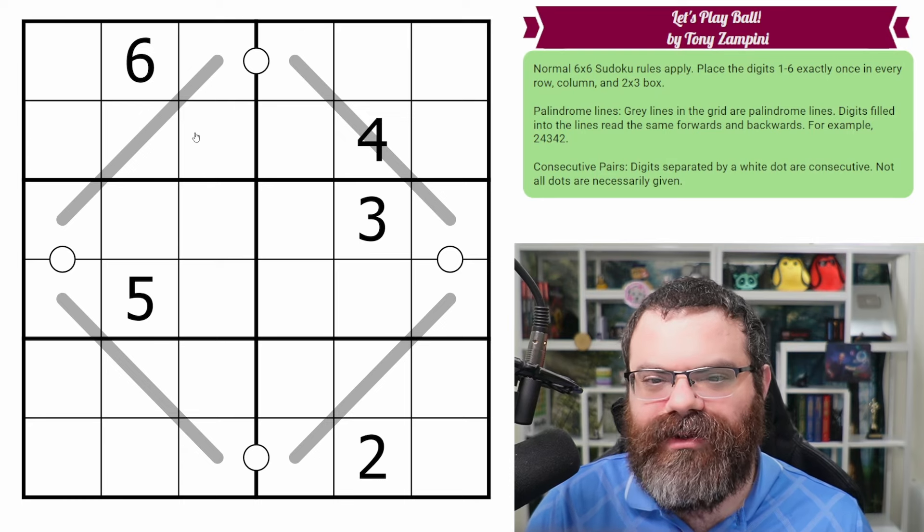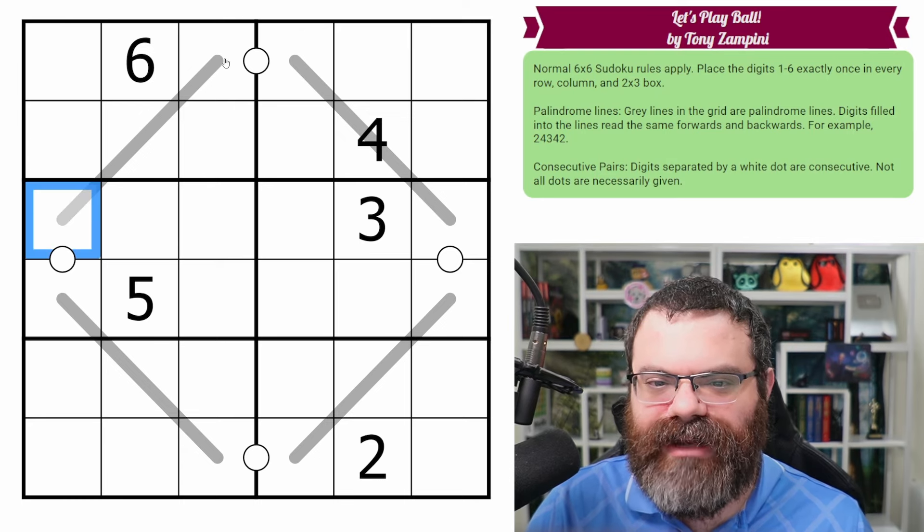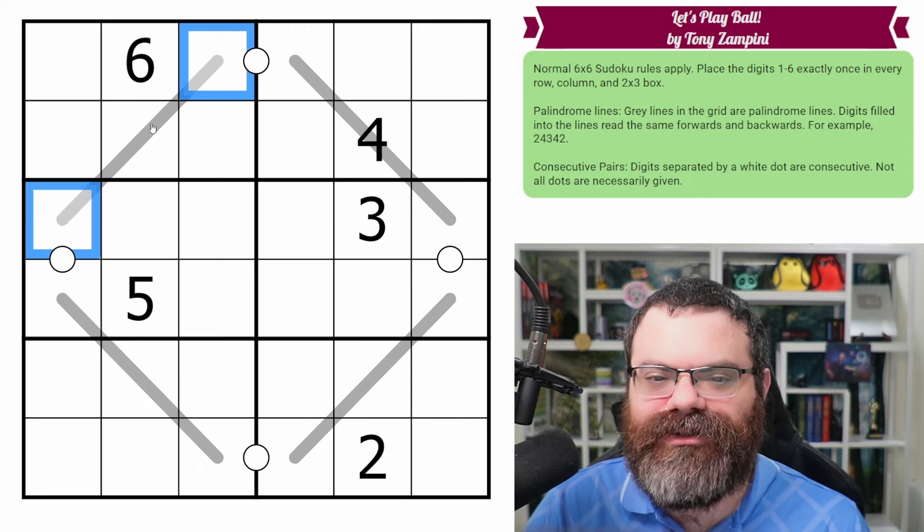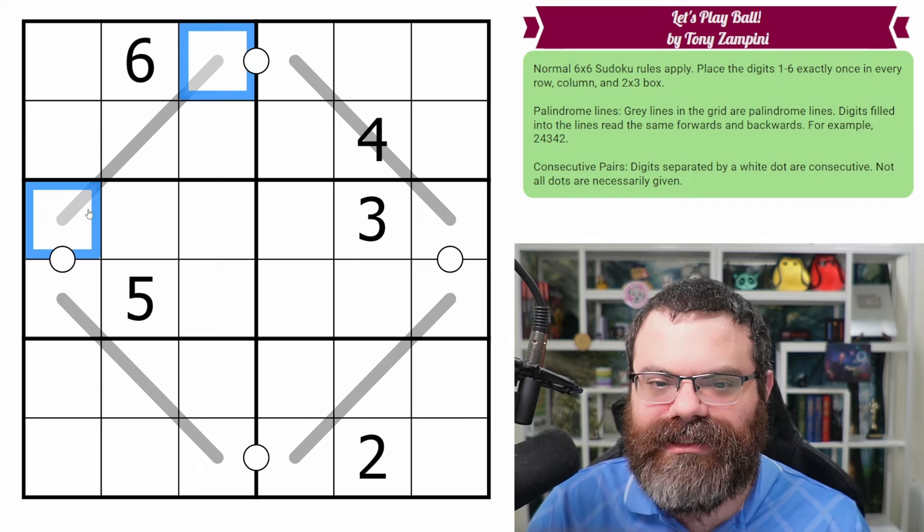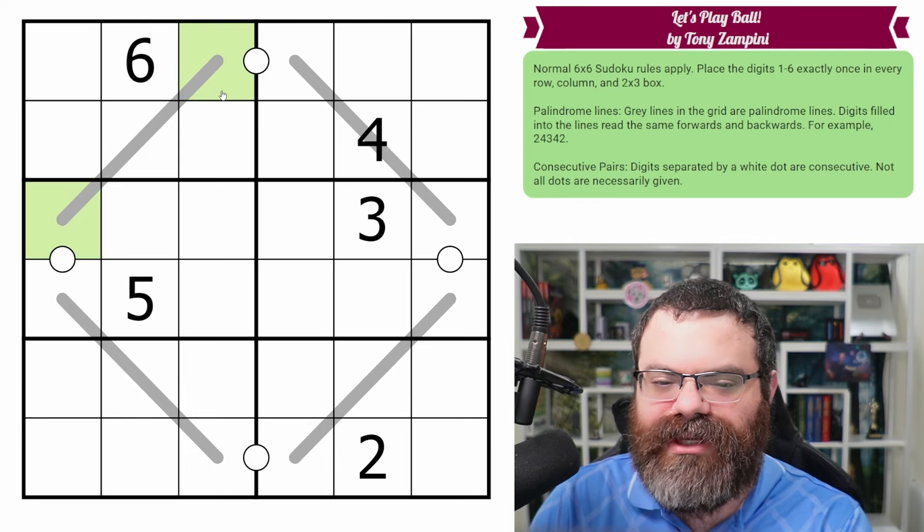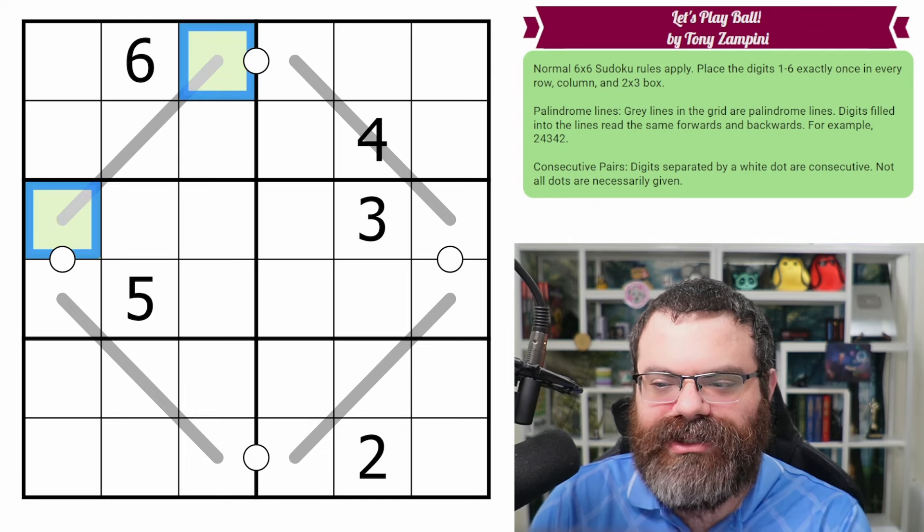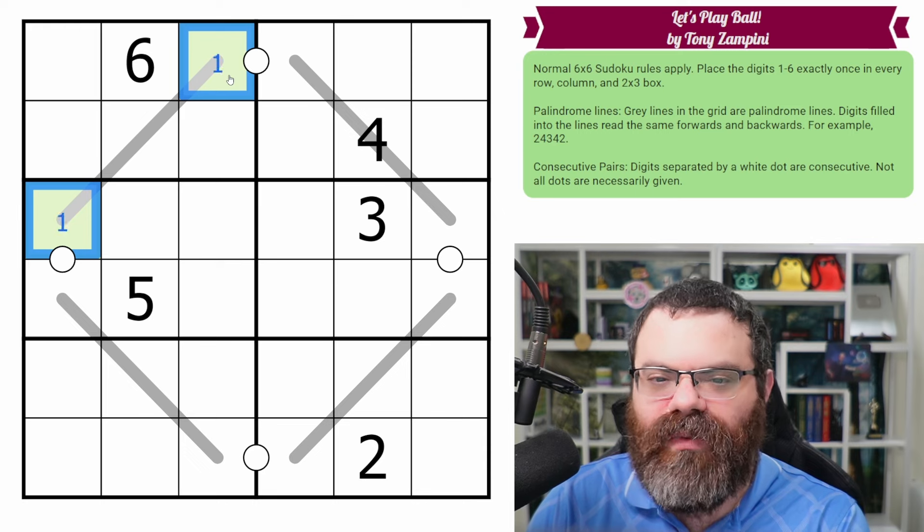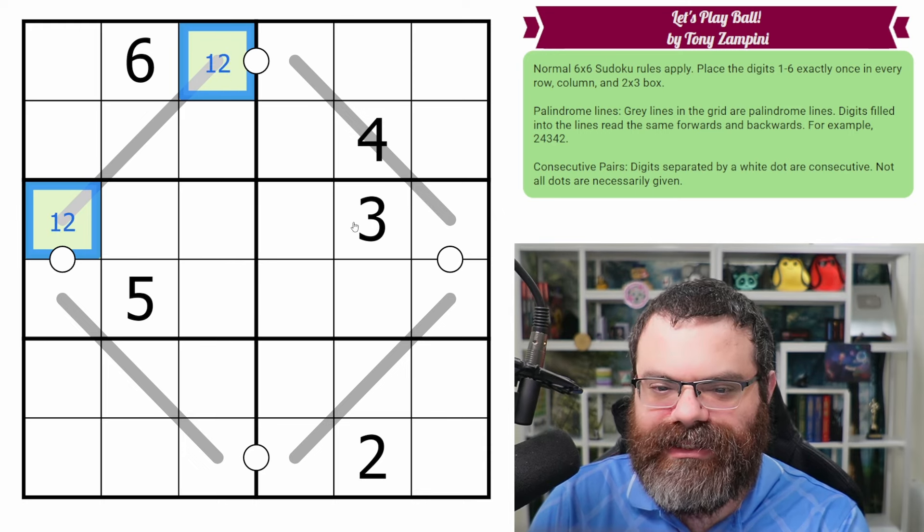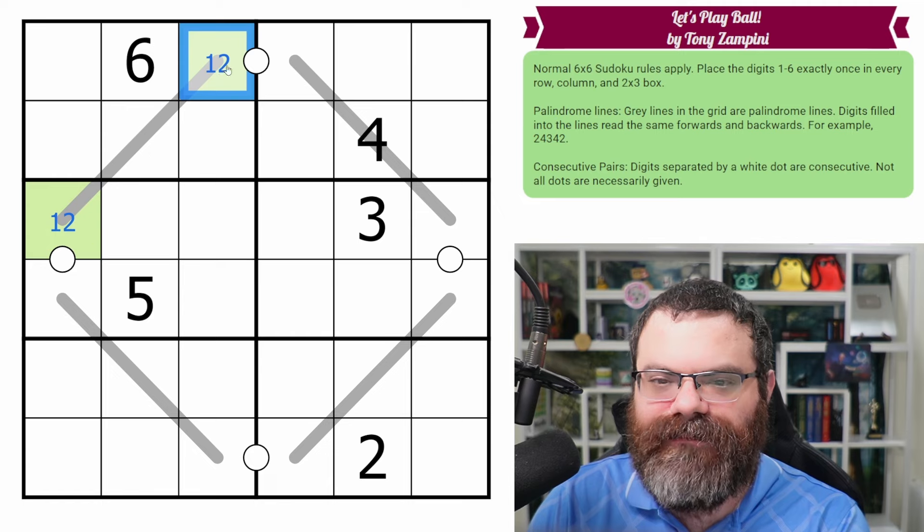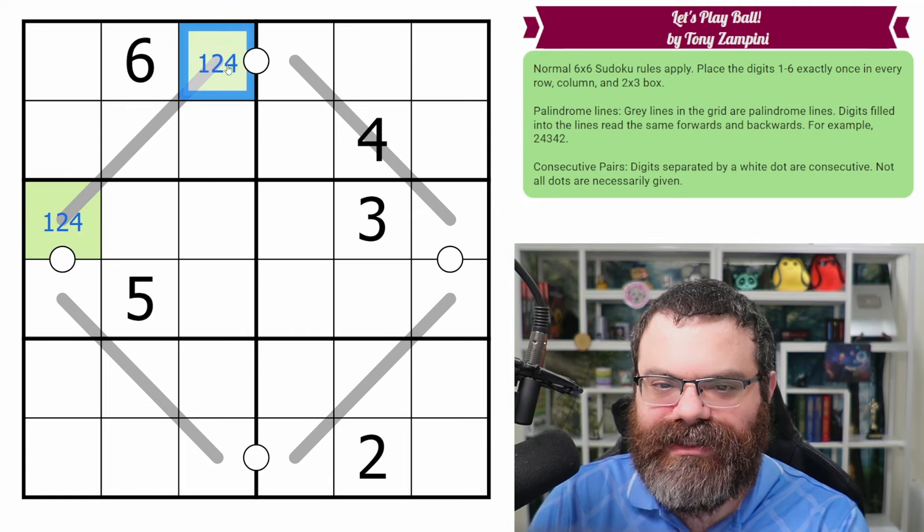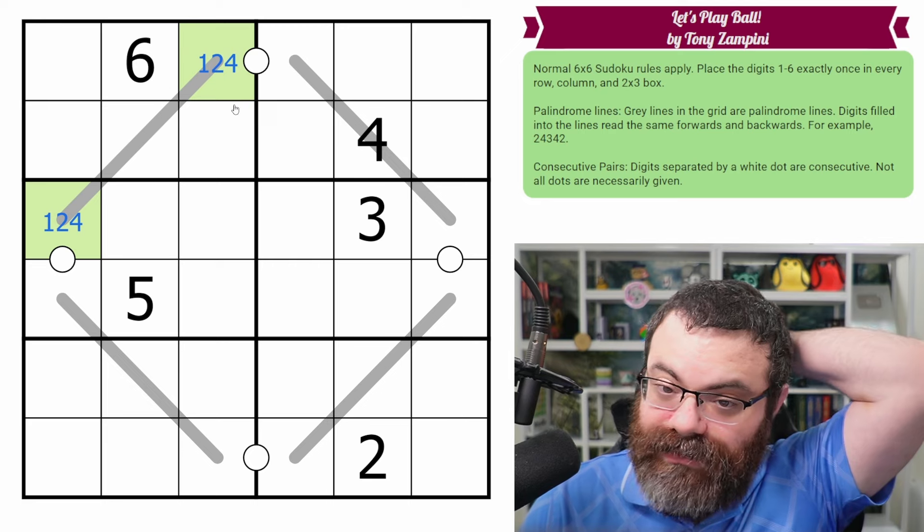So the palindrome rule basically creates clones in the grid. Whatever digit goes here has to go here, and that will fulfill the palindrome. The middle digit can be whatever it wants because it doesn't have to repeat anywhere. So these two are the same digit as each other. Let's call that green, whatever it is. Now, what could green actually be? Well, it could be a one. It could be a two. It can't be three - this green sees a three. It could be a four. It can't be a five because the green sees a five, and it can't be a six because the green sees a six. So we're down to one, two, four there.